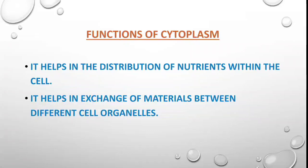What are the functions of cytoplasm? First, it helps in the distribution of nutrients within the cell — cytoplasm helps in the transport or distribution of any kind of nutrient inside the cell. Secondly, it helps in the exchange of material between cell organelles; if a material has to be transported from one organelle to another, it is transported with the help of this jelly-like substance called cytoplasm.